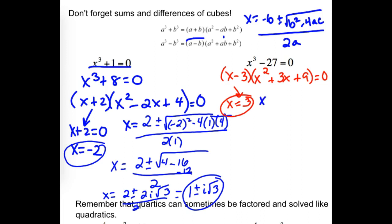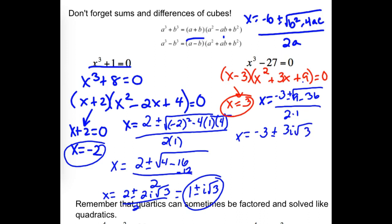Let's check. x equals opposite of b — so negative 3 — plus or minus square root of b squared (which is 9) minus 4 times 1 times 9. 9 minus 36 is negative 27. So x equals negative 3 plus or minus i times 3√3, all over 2. Two answers here, one more there.